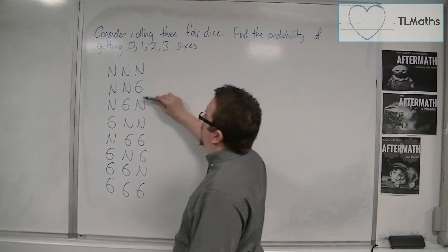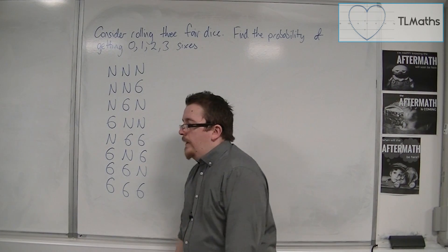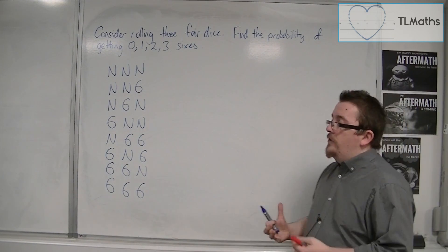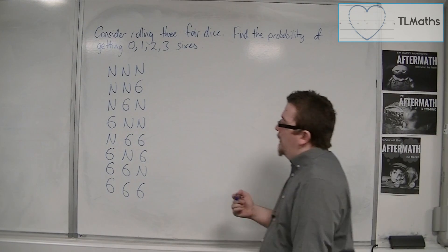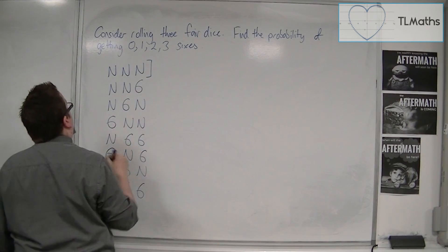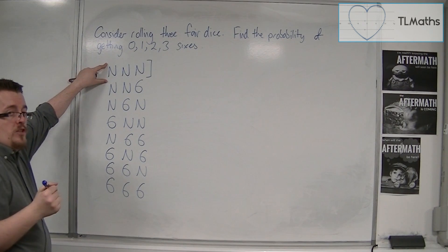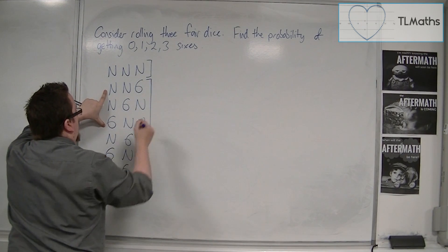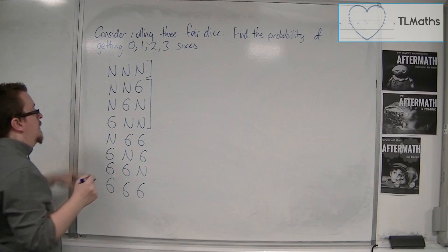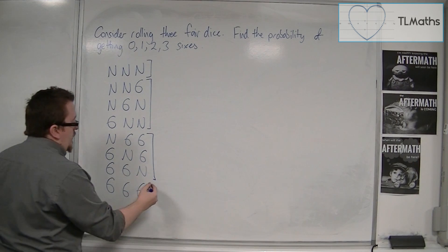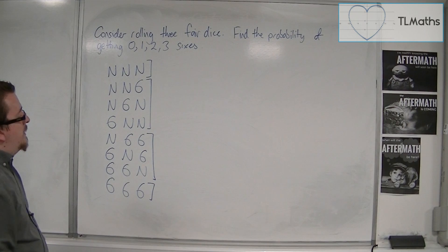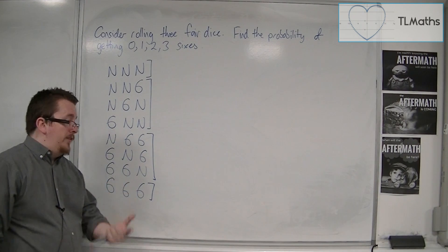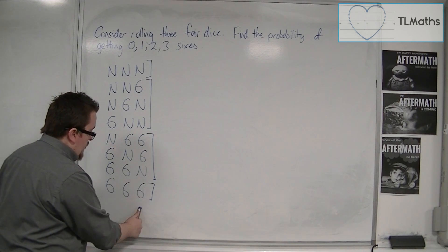So I've actually got 8 different possibilities here. It's easy to link these up: one situation with three non-6s, three situations with one 6, three situations with two 6s, and one situation with three 6s. It makes sense that we have 8, because we have two choices — either a 6 or not a 6 — so 2 × 2 × 2 = 8.